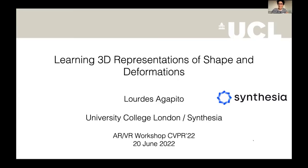Thank you for inviting me today. I'm going to talk about how to build 3D representations of the world. We want to make these representations for AR and VR systems, and the first building block for content creation is always 3D reconstruction. We need to capture the real world before we can edit or synthesize new content, and we need to do this in an agile way — reconstructing with a single RGB camera or a single video.